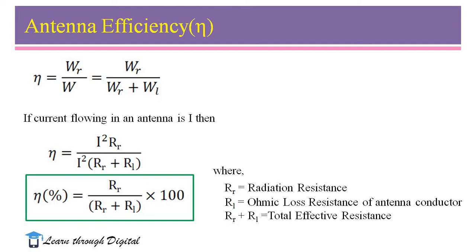For an ideal antenna, we assume that there are no losses. If there are no losses, RL = 0. If RL = 0, that means efficiency is 100%. It means that the power dissipated by an antenna is equal to the power radiated by an antenna.